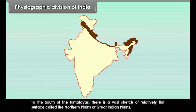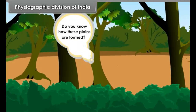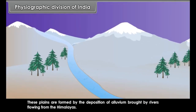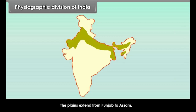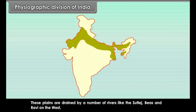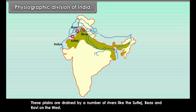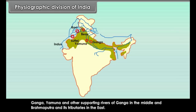To the south of the Himalayas, there is a vast stretch of relatively flat surface called the Northern Plains or Great Indian Plains. These plains are formed by the deposition of alluvium brought by rivers flowing from the Himalayas. The plains extend from Punjab to Assam and are drained by rivers like the Sutlej, Beas and Ravi on the west, Ganga, Yamuna and other tributaries in the middle, and Brahmaputra and its tributaries in the east.